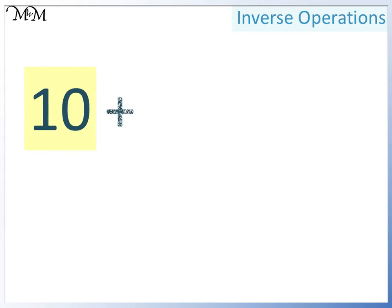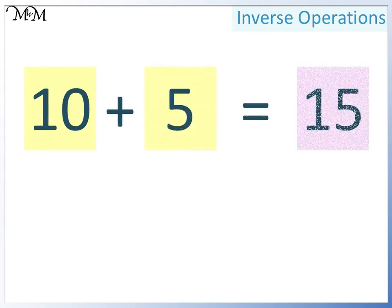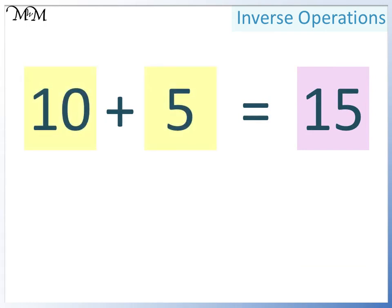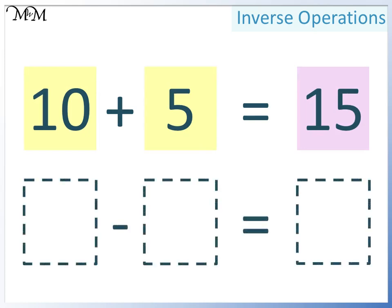Here's another example. 10 add 5 equals 15. Two smaller numbers add to make a larger number. Let's change this into a subtraction. For a subtraction, we need to have the largest number at the start.